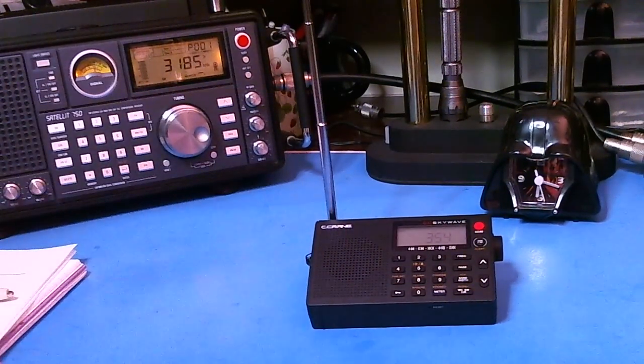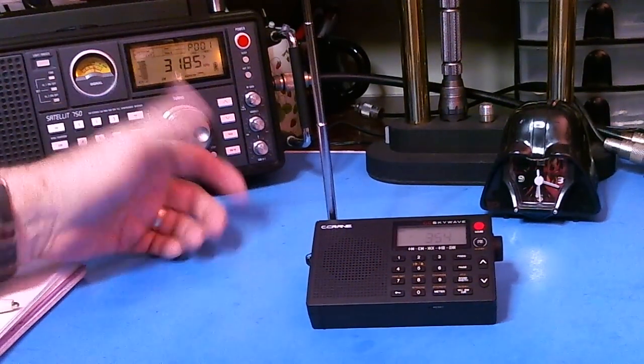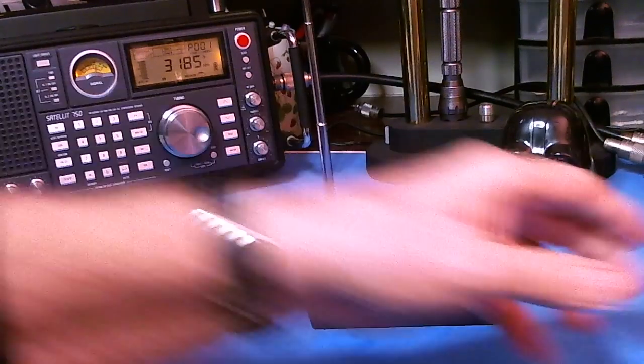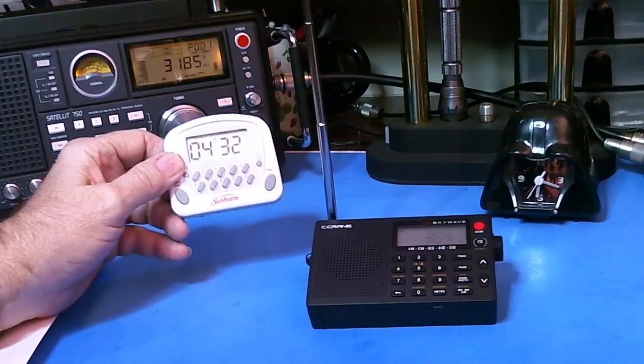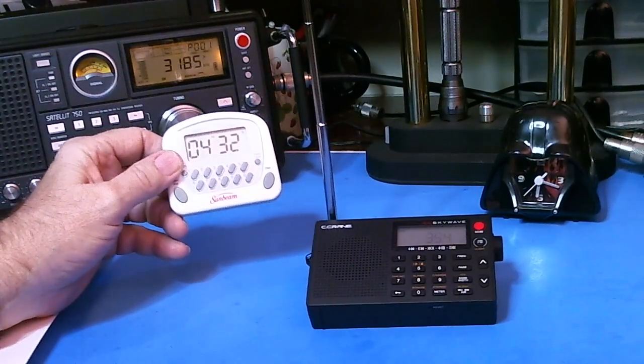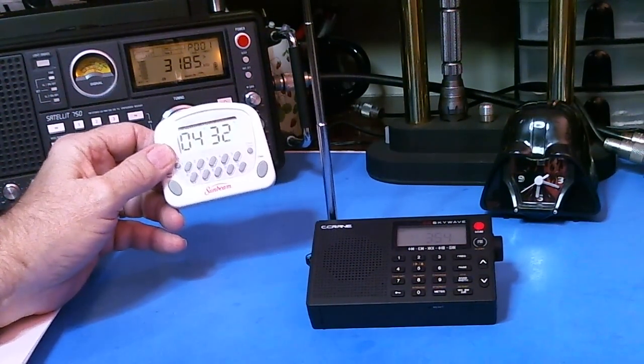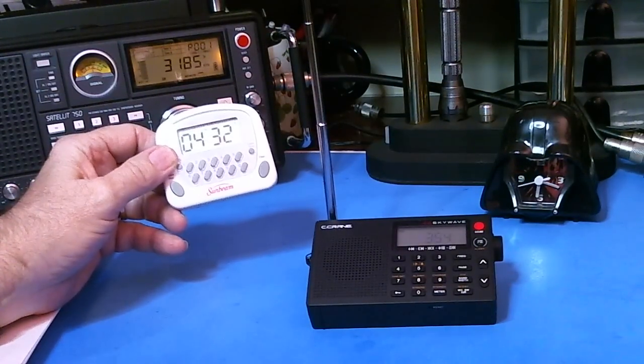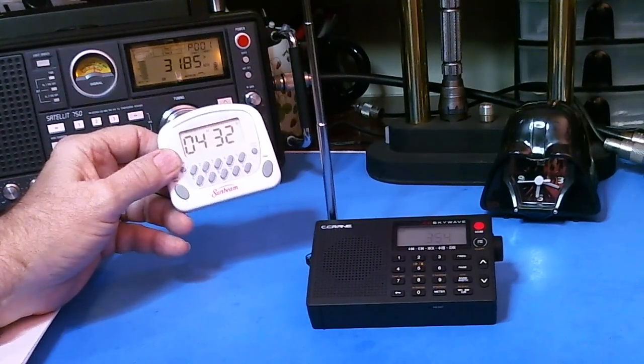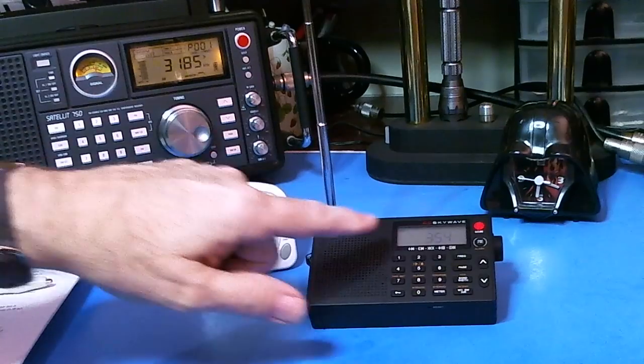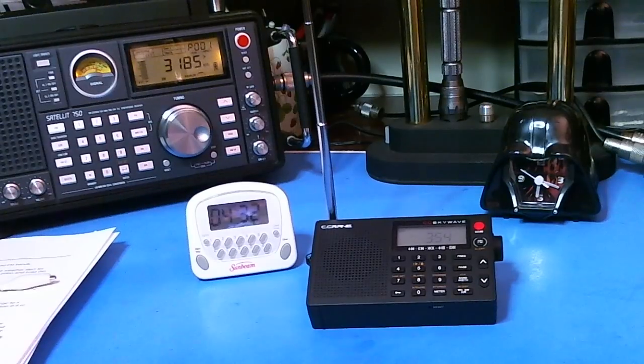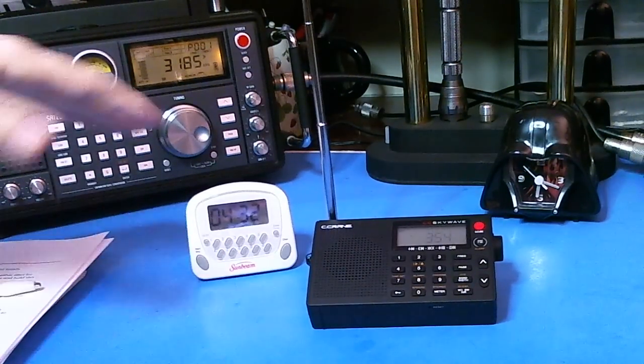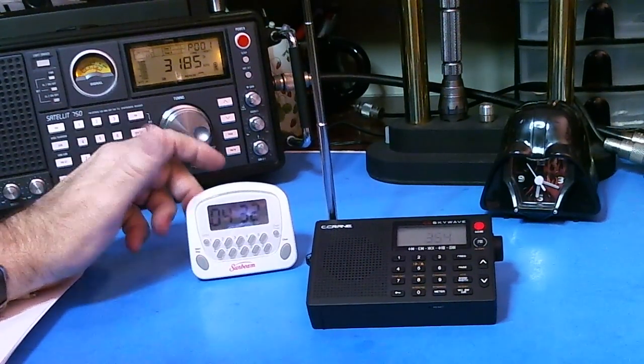Now, the other thing I noticed is, and I knew about but didn't realize how bad it was, the Grundig took four minutes and 32 seconds to scan the international bands. Now it does scan a few bands that the Skywave does not scan - it's outside its limits on shortwave. So that's one thing.